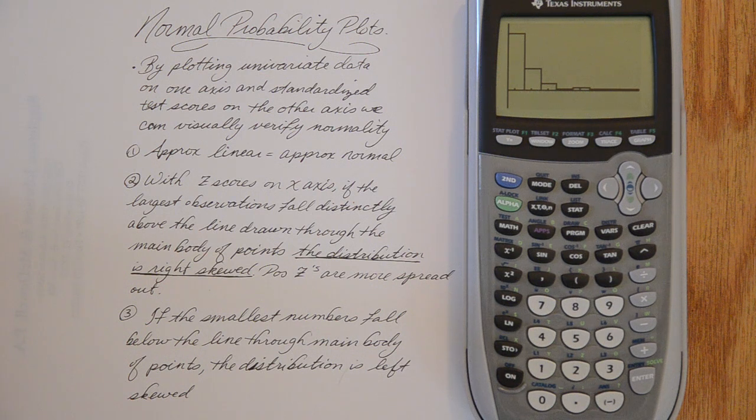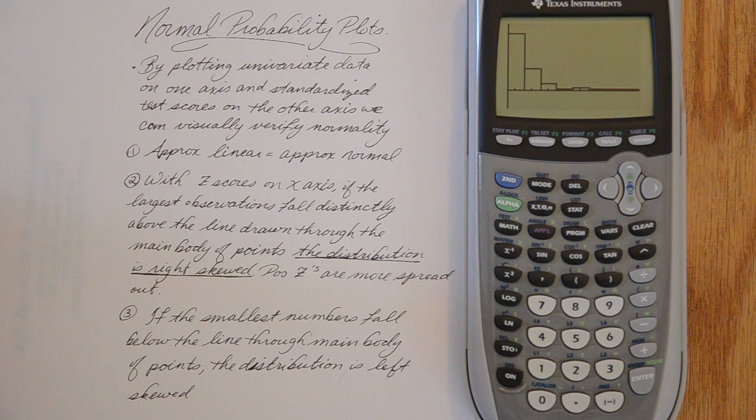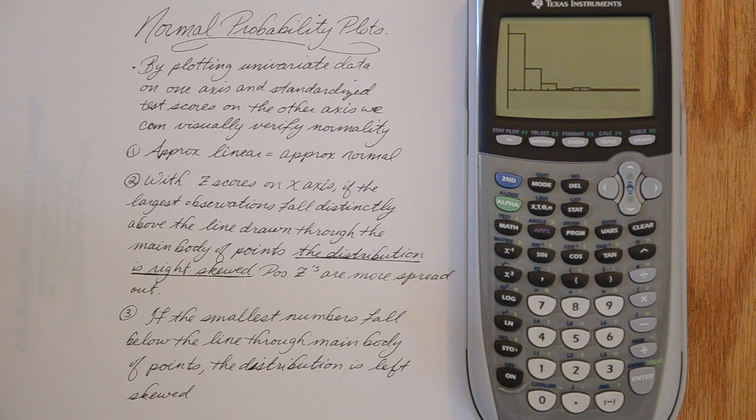Now on standardized tests, a lot of times they will ask you to compare a histogram to a box plot and see if you can identify the correct pairing. Well, we are going to be looking for a box plot that is right skewed. And we are also going to be looking for, well not here,